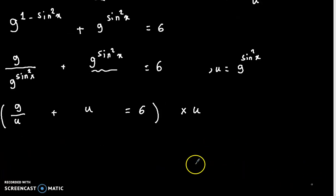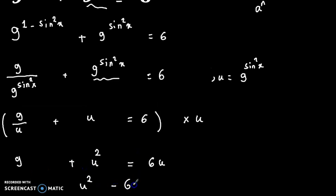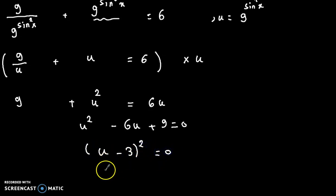We get 9 plus u squared equals 6u. Bringing 6u to the other side gives u squared minus 6u plus 9 equals 0. This is a quadratic equation we can write as (u minus 3) squared equals 0, so u minus 3 equals 0, meaning u equals 3.